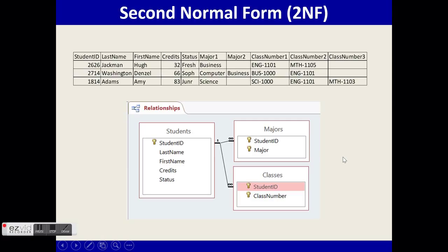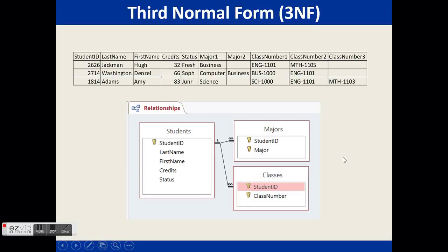Let's look at third normal form. Third normal form includes second, which in turn includes first. It eliminates transitive functional dependency. Transitive functional dependency is when table A is dependent upon table B, and B is dependent upon table C — therefore C is transitively dependent upon table A. What this means is that not all fields are directly dependent upon the key field.